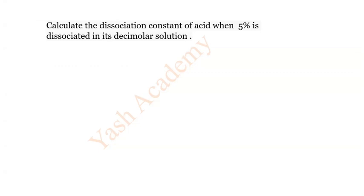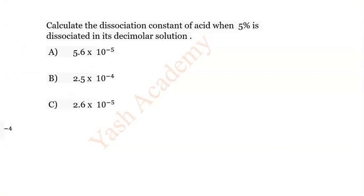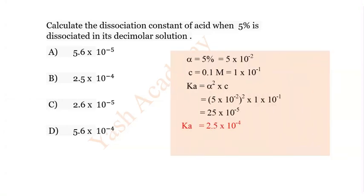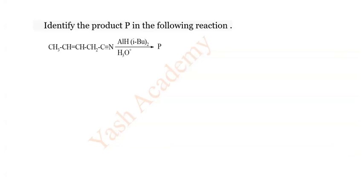Question 14: Calculate the dissociation constant of an acid when 5% is dissociated in its decimolar solution. Options: A) 5.6 × 10⁻⁵, B) 2.5 × 10⁻⁴, C) 2.6 × 10⁻⁵, D) 5.6 × 10⁻⁴. The correct answer is B) 2.5 × 10⁻⁴.